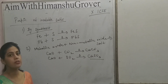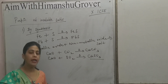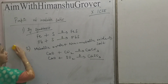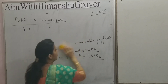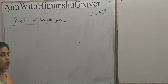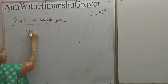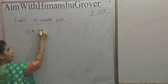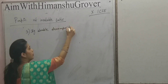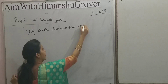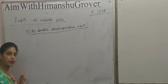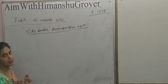The third method to prepare an insoluble salt is by double decomposition reaction, that is by precipitation reaction. One product must be a precipitate, that is an insoluble salt.